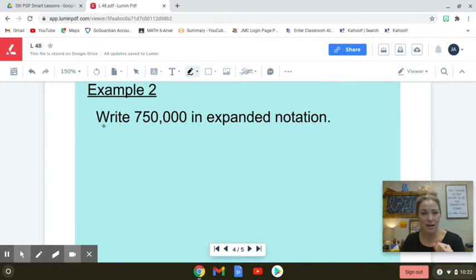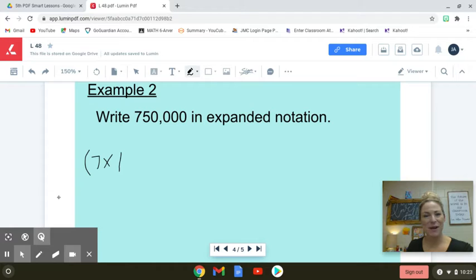Here's another example for you to try. Write the number 750,000 in expanded notation. Unpause when you're ready to check my answer. Okay, so I've unpaused my video as I started to do this work, because I started thinking some things in my head that might be crossing your mind, too.